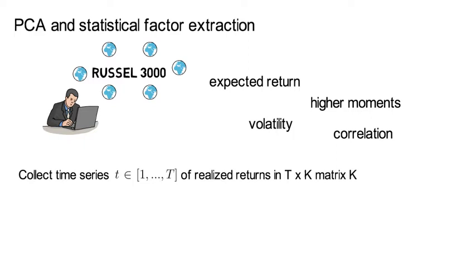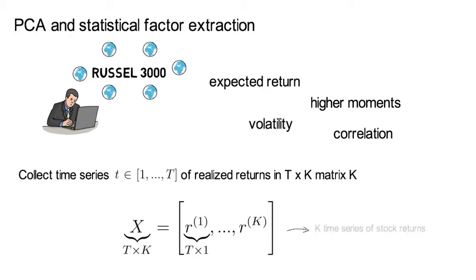Therefore let's collect the time series for t being element 1 to cap T of realized returns of these 3000 stocks in a T times K matrix which we call X. So here's what X looks like.